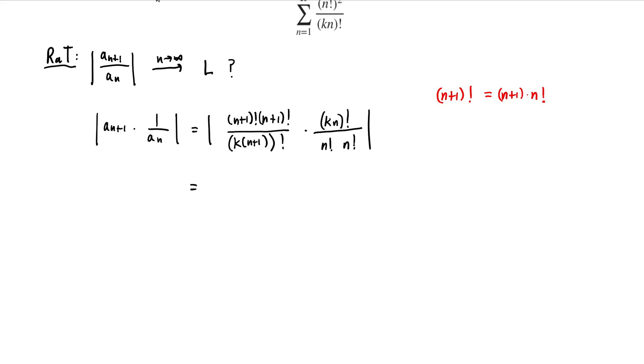The other thing that we should look at is this k times n plus 1 factorial. So k times n plus 1, first of all, is equal to k times n plus k, and this whole thing factorial, this is going to give us k times n plus k down to k times n plus k minus 1, multiply it all the way down to k times n plus 1 times k times n factorial.